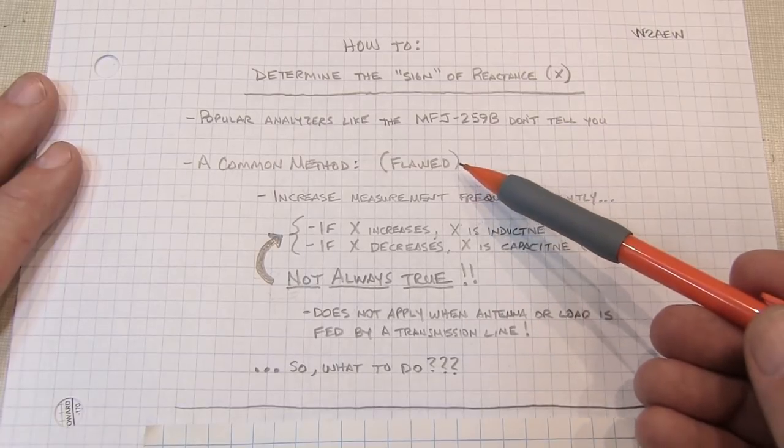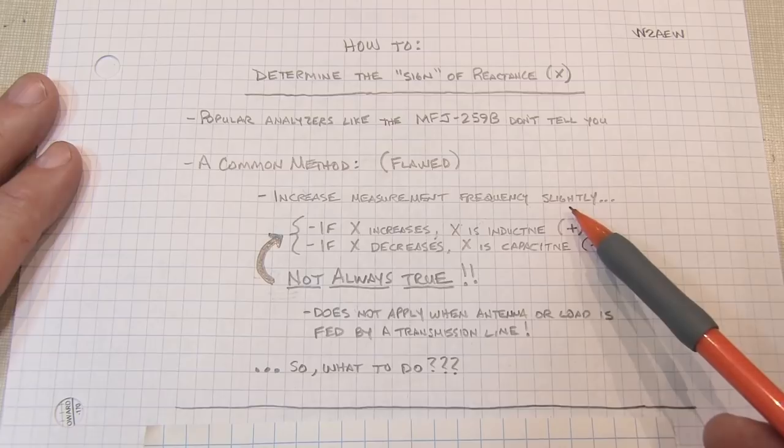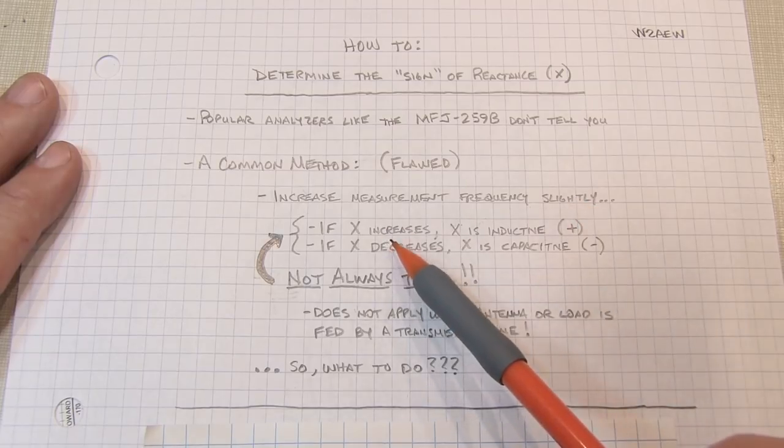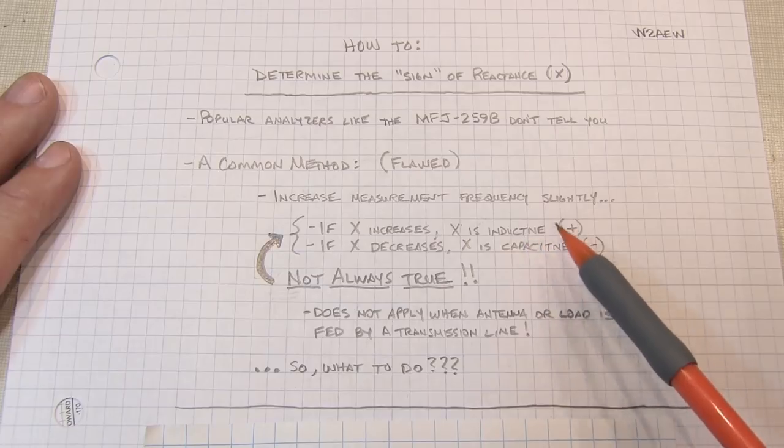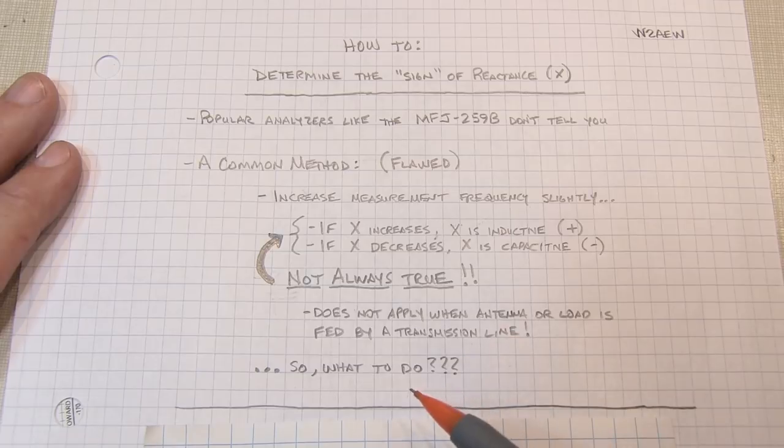One very common method that you'll see written up is to increase the measurement frequency slightly and note what happens to the reactive component. If it increases, then it's inductive or positive. If it decreases as you increase the frequency, then it's capacitive or negative.